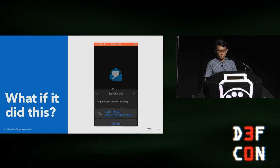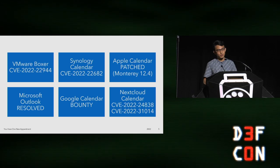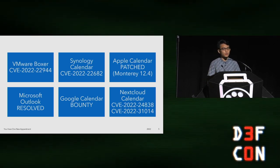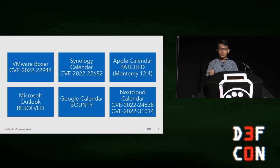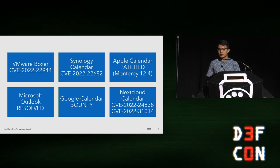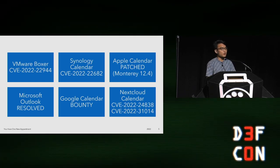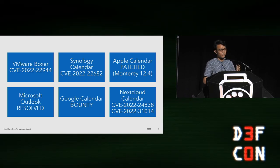For those of you on red teams, you might be familiar with using calendar invitations as a phishing vehicle. But what I was more interested in was looking into exploit scenarios with the iCalendar format — ways it could be used and abused, ways parsers could be broken to get an exploit out. This was fairly fruitful research even though I threw the net pretty wide, covering vulnerabilities from VMware Boxer to Synology Calendar, Apple Calendar, Microsoft Outlook, Google Calendar, and Nextcloud Calendar.